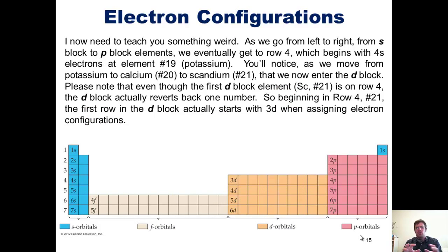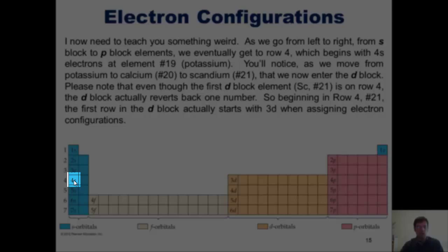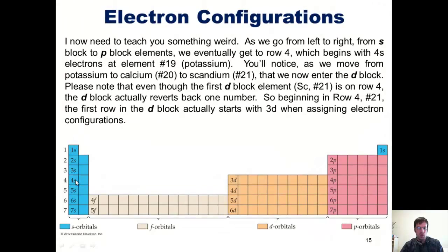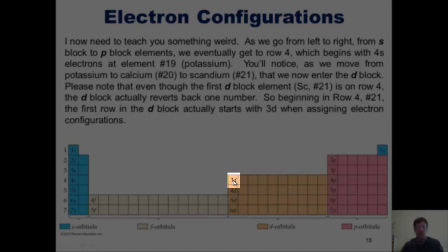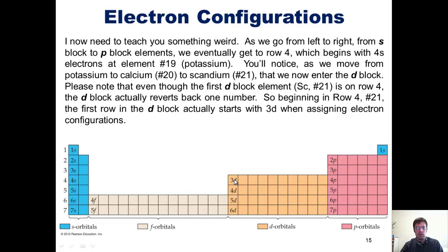Now I need to teach you something weird. As we go from left to right, from the s-block to the p-block elements, we eventually get to row 4, which begins with 4s electrons at element number 19, potassium. As we move from potassium in row 4 to calcium, element number 20, and then to scandium, element number 21, we now enter the d-block. Please note that even though the first d-block element, scandium, element number 21, is on row 4, the d-block actually reverts back one number. So beginning with row 4, the first row in the d-block actually starts with 3d instead of 4d when we assign electron configurations.